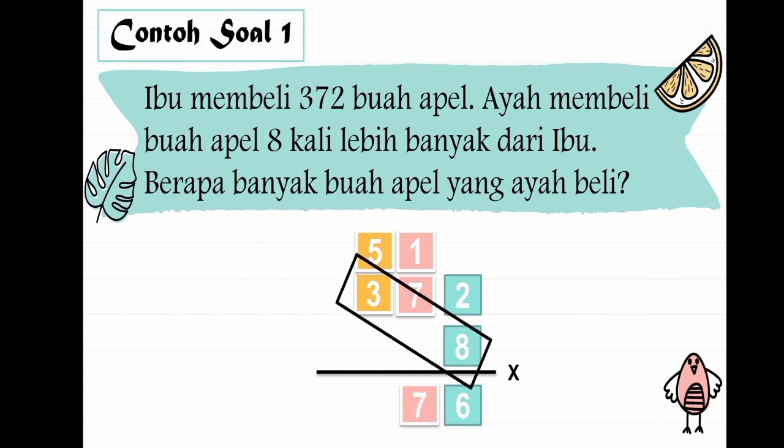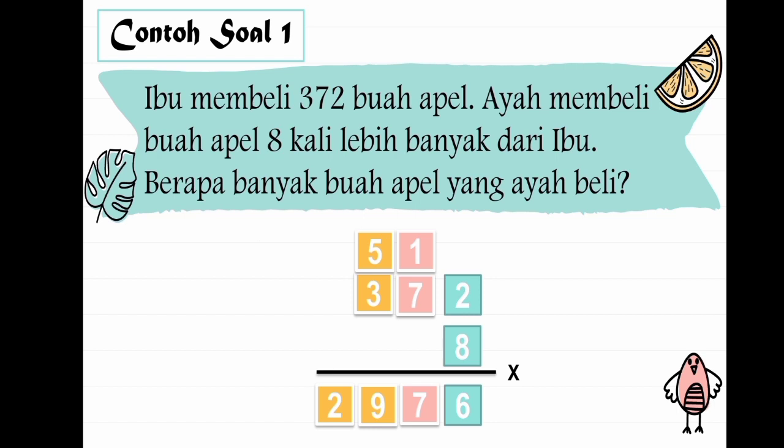Lalu yang terakhir, 3 dikali 8 hasilnya 24. Jangan lupa ditambah 5, jadi 29. Berarti 372 dikali 8 sama dengan 2976.